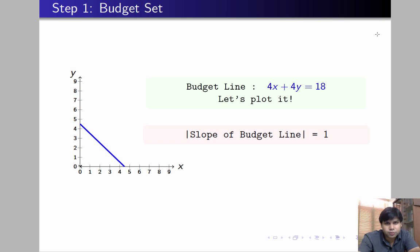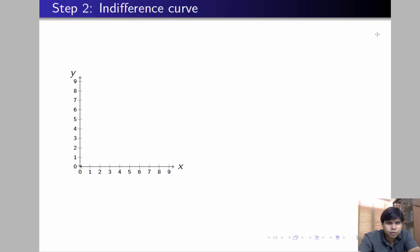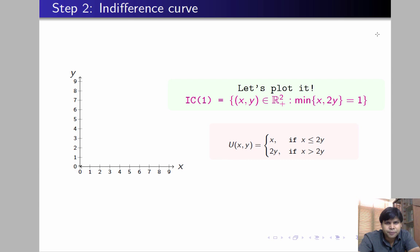The next step will be to plot the preferences. In order to plot the preferences, we'll pick some random utilities and we'll try to plot indifference curves for those utility levels. Let's consider a satisfaction level 1, for example, and let's try to plot an IC which gives the individual one level of satisfaction. Notice that the utility function takes value x when x is less than or equal to 2y, and it takes value 2y when x is greater than 2y.